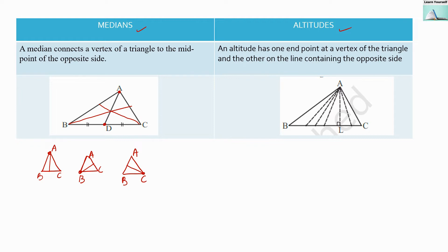Now let us talk about altitude. An altitude has one endpoint at a vertex of a triangle and the other on the line containing the opposite side. We are not connecting this line to the midpoint of the opposite side — that is the basic difference between a median and an altitude.